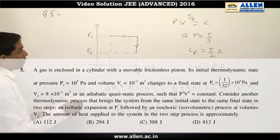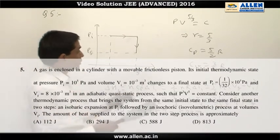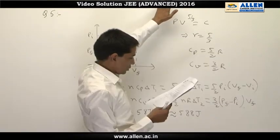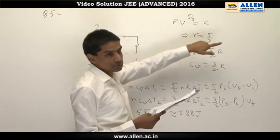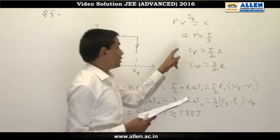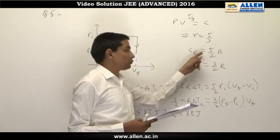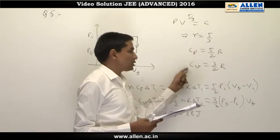Question number 5 of paper number 2. It is given p³ into v⁵ is constant, that means p v^(5/3) is constant for an adiabatic process. That means for the gas gamma equals 5/3, cp happens to be 5/2 R and cv happens to be 3/2 R.